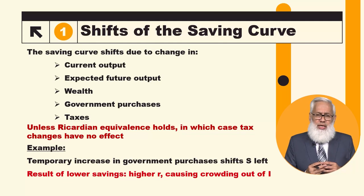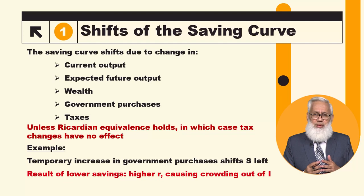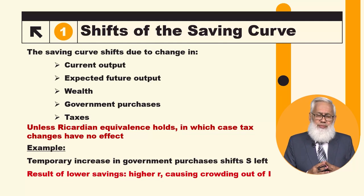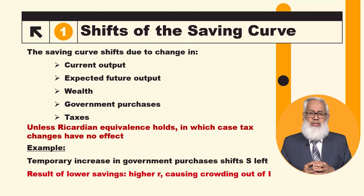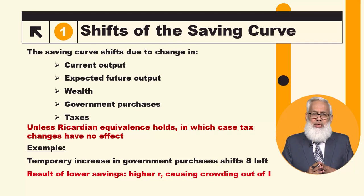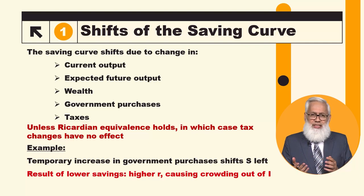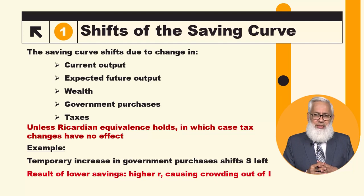According to the Ricardian Equivalence proposition, if we hold it, changes in taxes will not affect savings. But empirically, there is evidence that people are far-sighted and other factors such as borrowing constraints are binding.